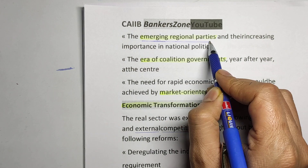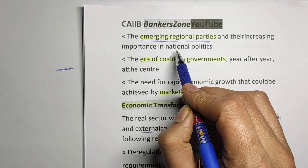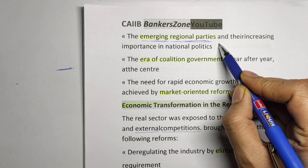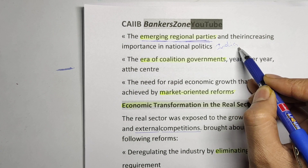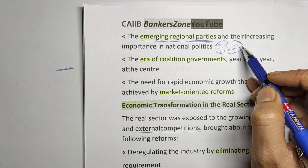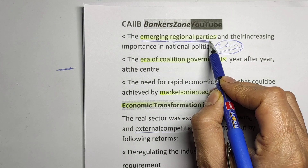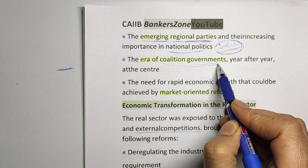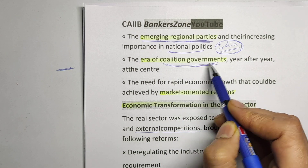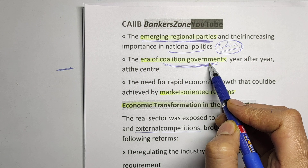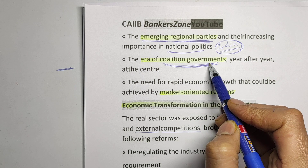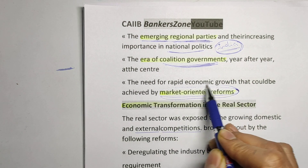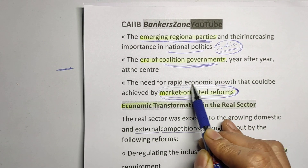Why was the Indian economy able to stand in such circumstances? Mainly because in India there are emerging regional parties that have importance in national politics. Second is coalition government — many coalition governments formed after 1990, which helped sustain the economy. Third, and very important, is market-oriented reform — we adopted market-oriented reforms that help us sustain easily in the global market.